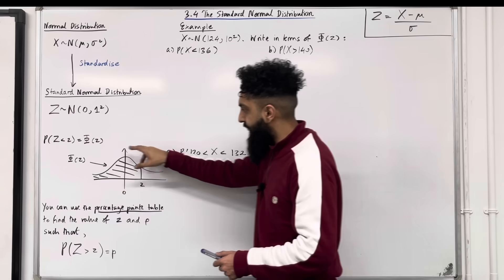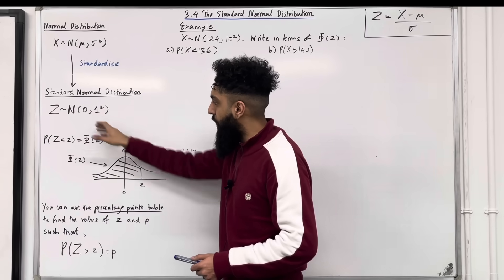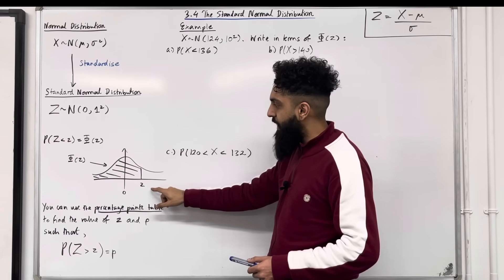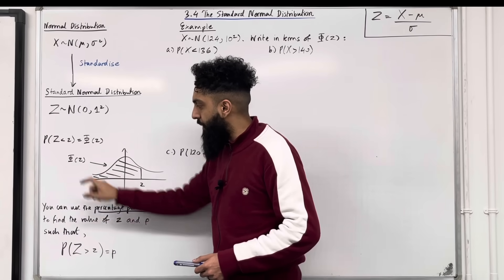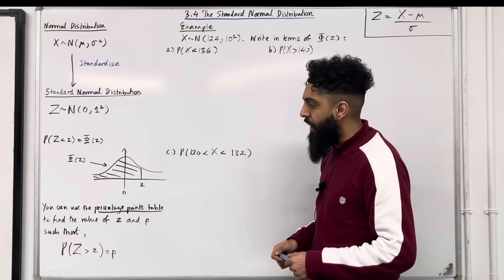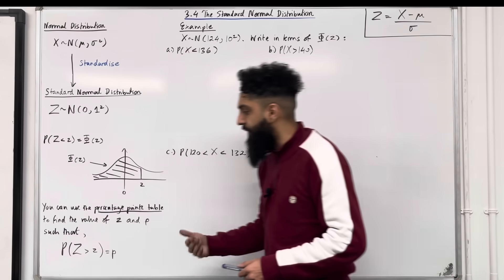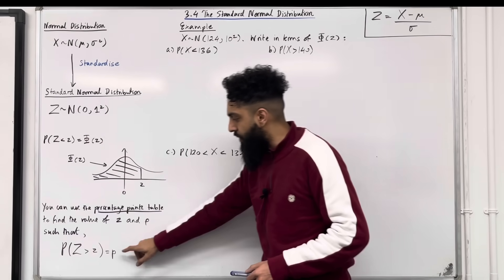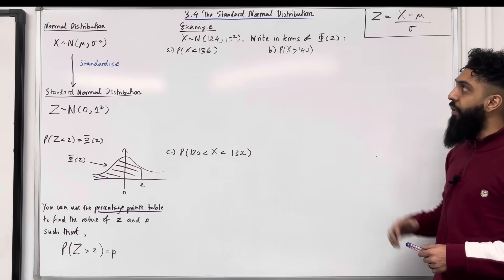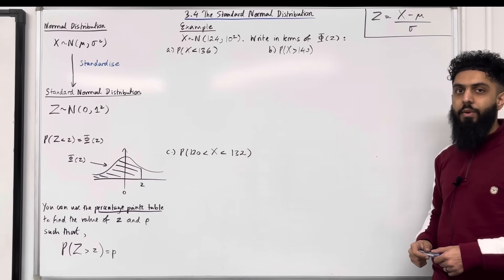Here is a bell-shaped curve for a standard normal distribution. Because the mean is 0, the bell-shaped curve is centered at 0. The area to the left of lowercase z is your phi of Z. You can use the percentage points table, which is in the formula booklet, to find lowercase z and lowercase p such that probability capital Z is greater than lowercase z equals lowercase p. These are the key facts of 3.4. I will be implementing these within an example and an exam-style question.